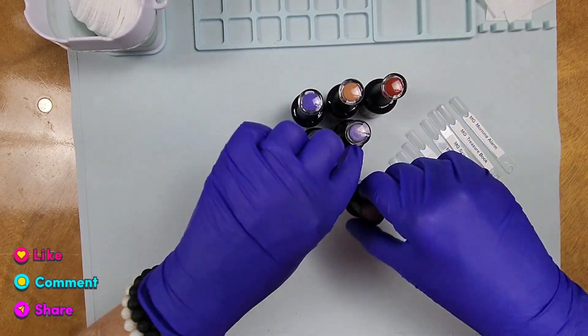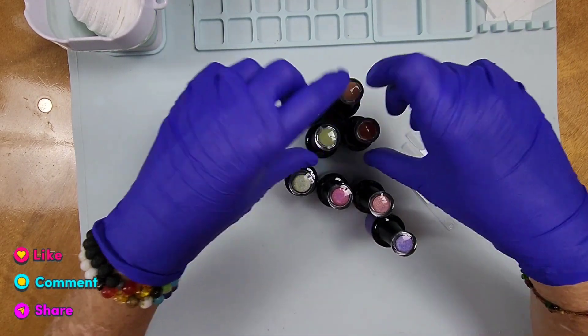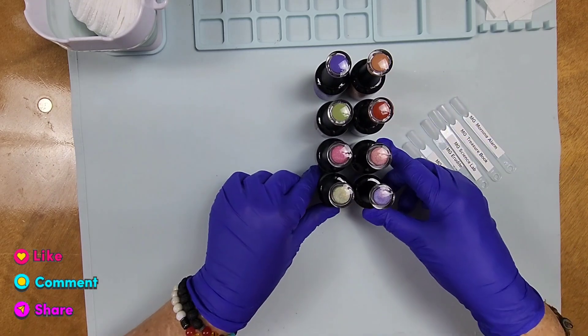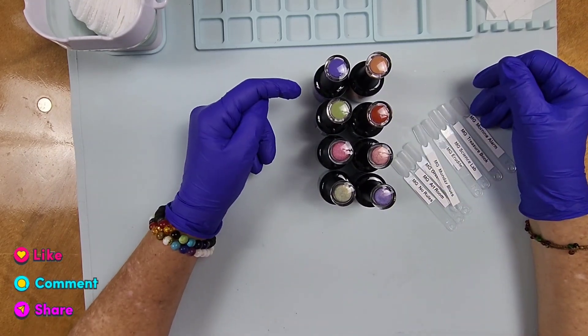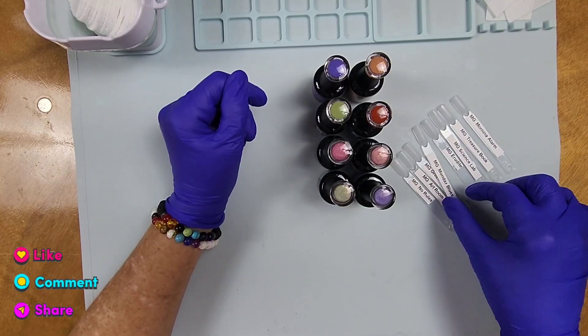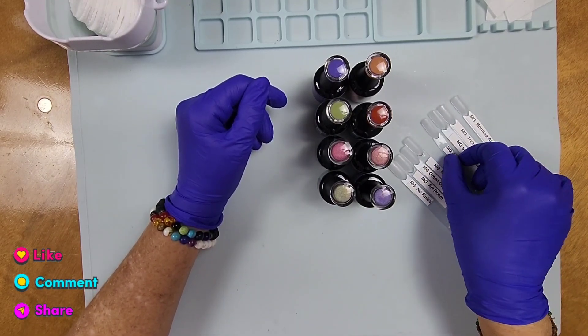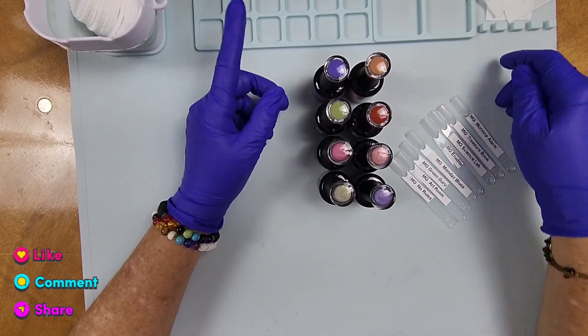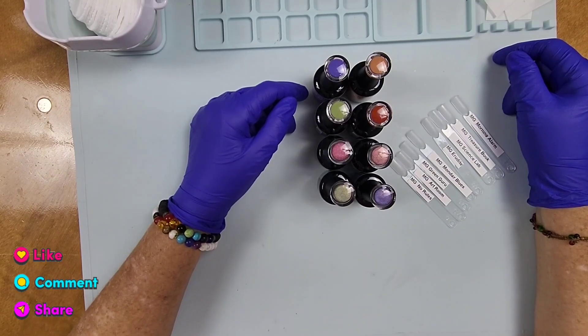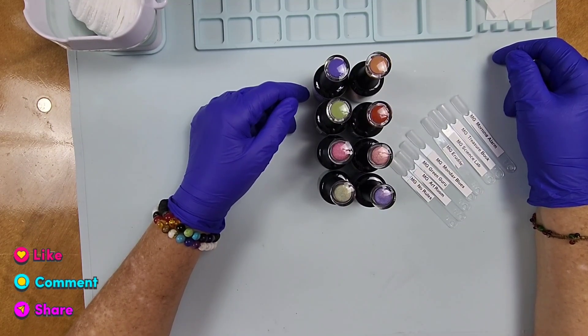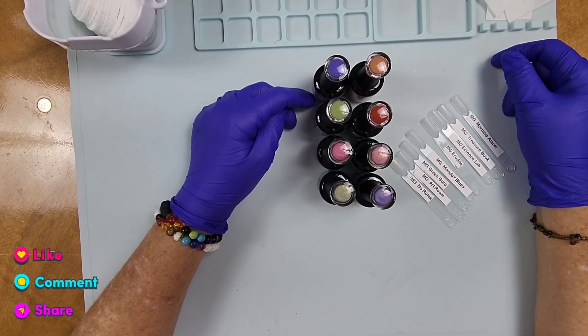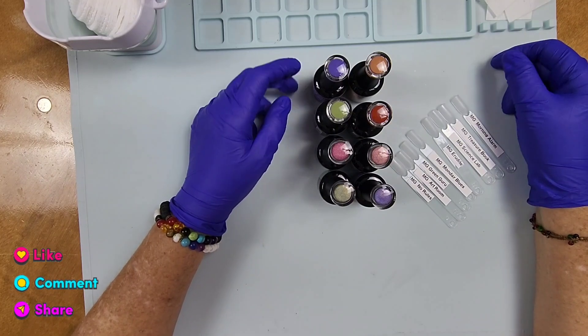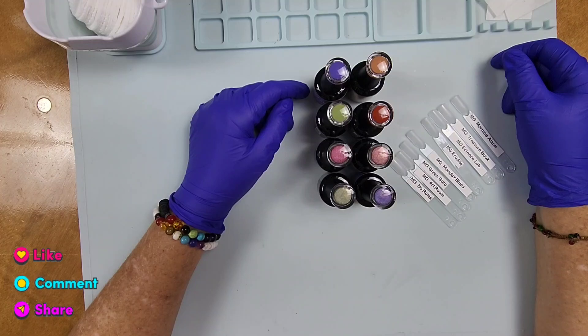A year ago in August, the first collection that I fell in love with that drew me into Madam Glam was the Nourish collection. That was the one I told my bestie - I said girl, I need that whole collection. I love every single one of them. It was perfect for autumn, perfect for fall time. I've used it so much. When I look at this one and think of that one, it's like wow.